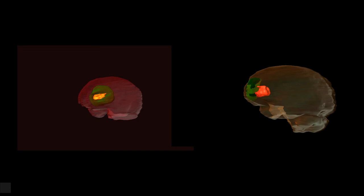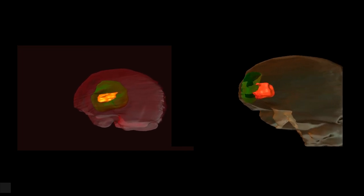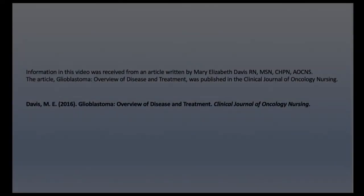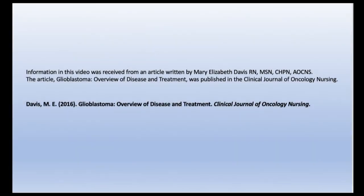The left shows 5.7% of the brain composed of pathology related to the glioblastoma, while the right shows only 1.7% of pathologic material.